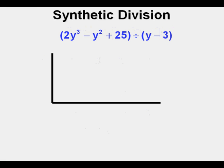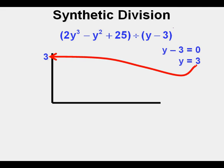We'll look at one last example. We have the third degree polynomial 2y cubed minus y squared plus 25 divided by the binomial y minus 3. We'll very quickly go through this as a review. Solving for y when y minus 3 equals 0, we have 3 here on the outside of the form.